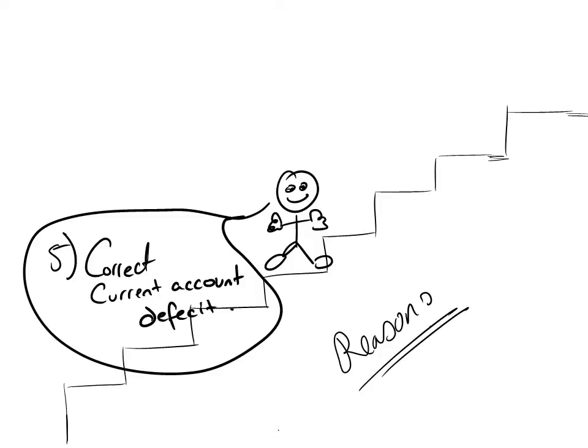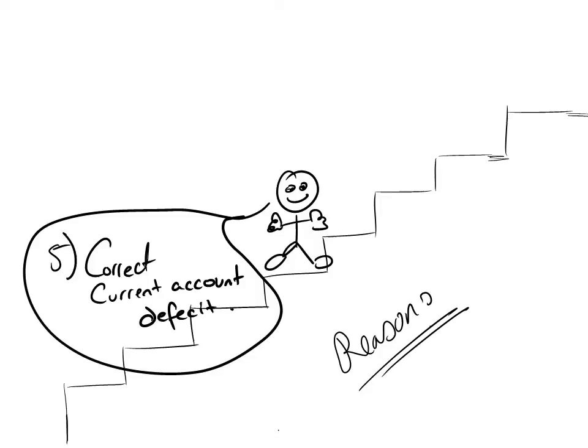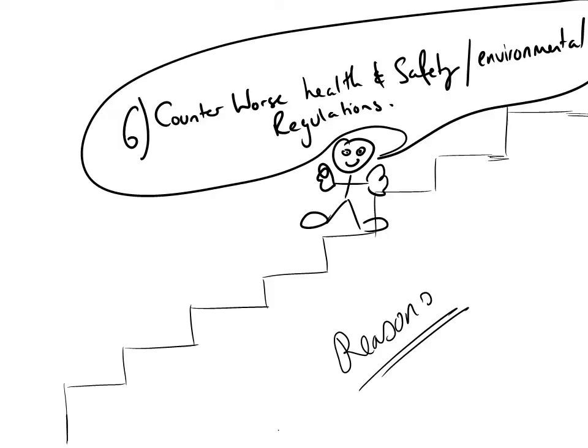Another one would be to correct a current account deficit. That is when if M decreases, X minus M increases. Another reason would be to counter worse health and safety environmental regulations. This is the idea that poor health and safety results in lower production costs, therefore need to counter, because they cannot compete with so low prices.